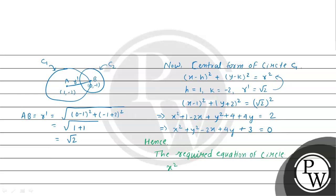The required equation of the circle is x squared plus y squared minus 2x plus 4y plus 3 equal to 0. This is the final answer of the given question. I hope you understood the solution. Best of luck. Thank you.